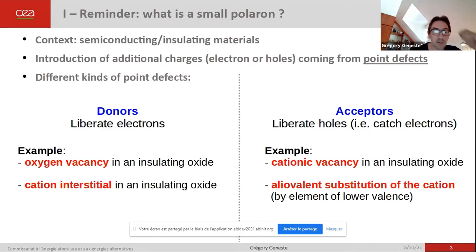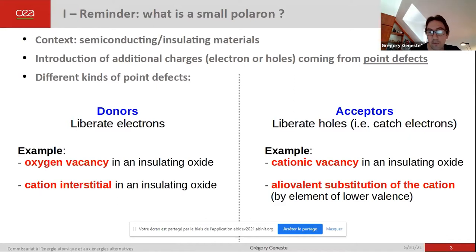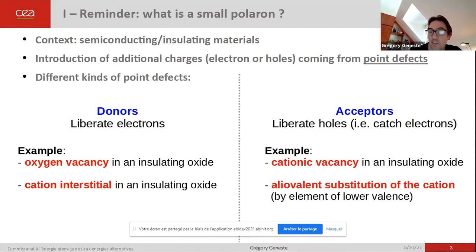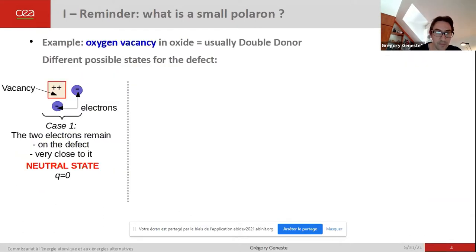In oxide materials, typical examples for donor defects are the oxygen vacancy or the cation interstitial. And typical examples for acceptors are the cation vacancies and the aliovalent substitution of the cation — that is to say, the replacement of the cation by an element of lower valence.